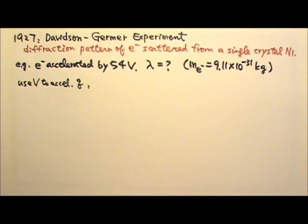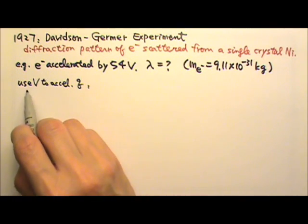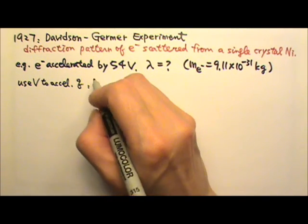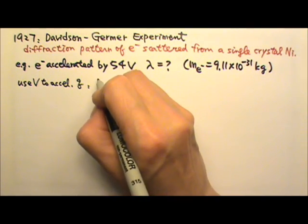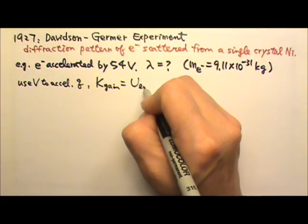In this problem, we have a voltage that is used to accelerate a charge. If we use a voltage to accelerate a charge, we can use the conservation of energy. The kinetic energy gain comes from the potential energy loss.